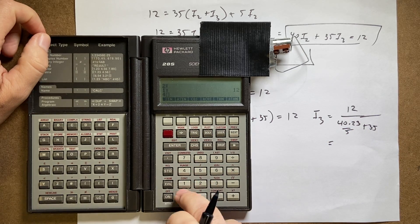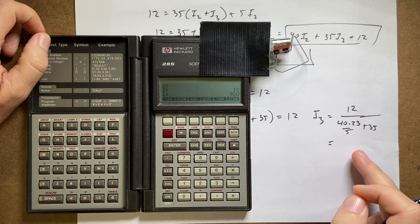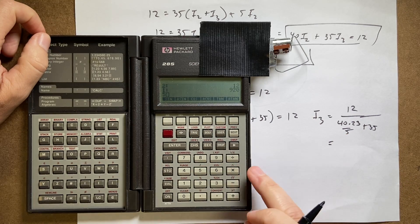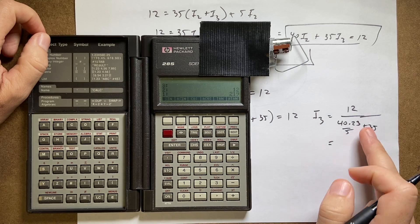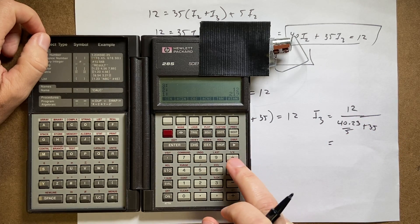40 enter, 23 times, now I'm going to divide that by 5, 5 divided by, now I'm going to add that to 35, 35 plus, and now I'm going to divide 12 by that.